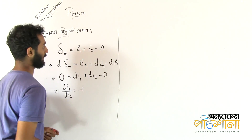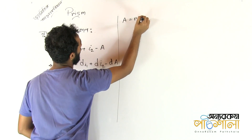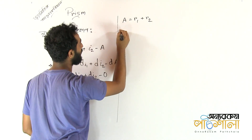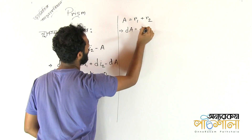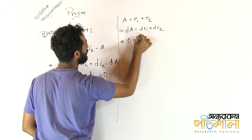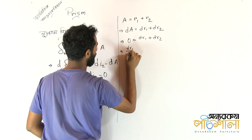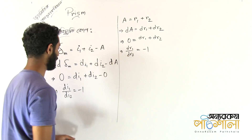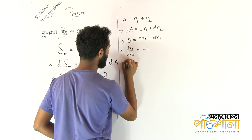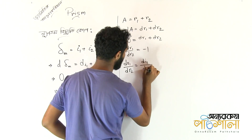Then we have r·I2. We need to ask: A equals 1 plus r·I2, and differentiating gives dI2 plus dr·I2 equals 0, so dr1 plus dr2 equals 0, meaning dr1 by dr2 equals minus 1. Equating the two relations: dr1 by dr2 is equal to dI1 by dI2.